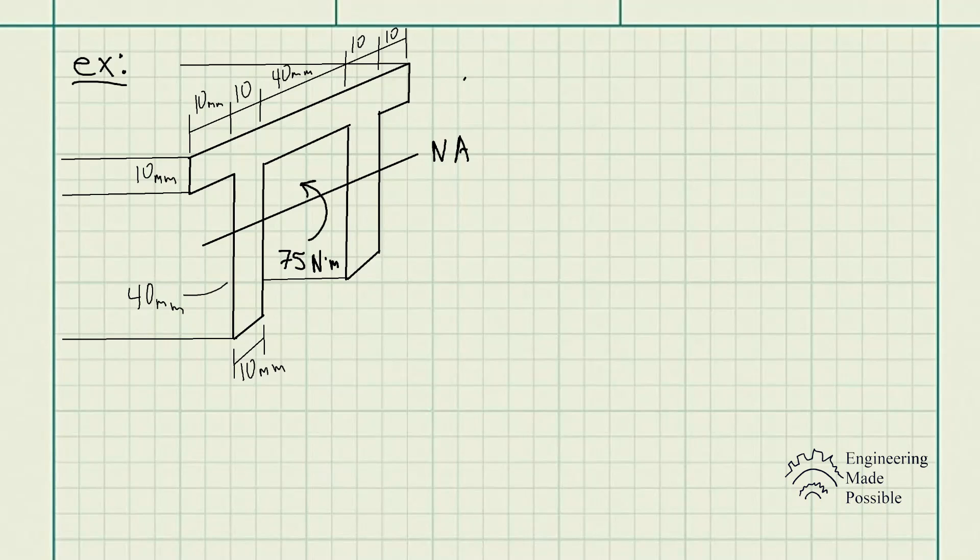For this problem statement, we have an aluminum machine part subjected to a moment of 75 newton meters. Determine the maximum tensile and compressive bending stresses in the part. You can see all the dimensions given - in this case, we're dealing with millimeters, and we have this bending moment that the beam is experiencing.